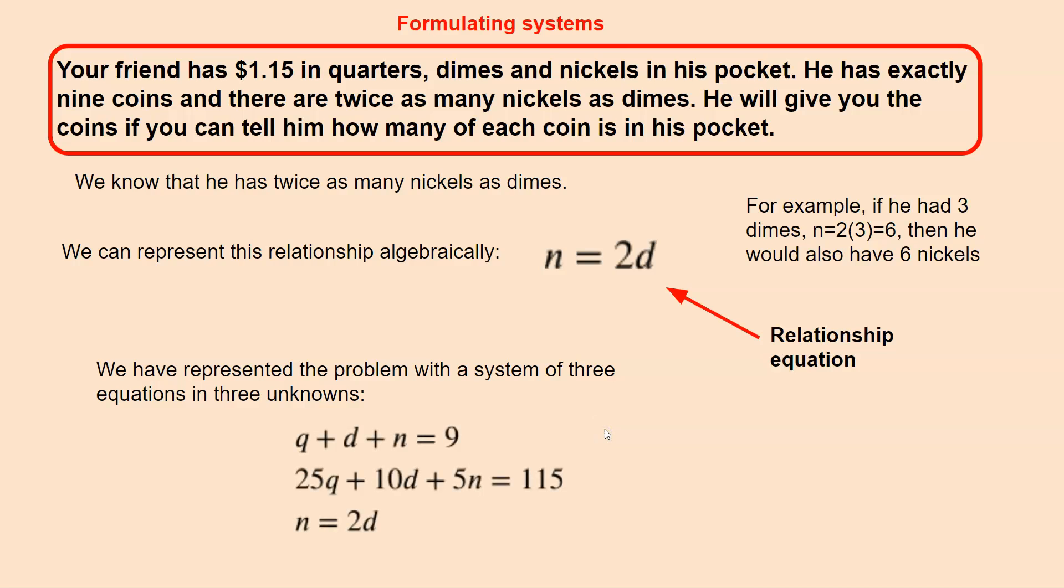So here are the three equations. We've got our total. We've got our total amount. We have our amount equation. We have our value equation. And we have our relationship equation. All this makes a three by three system of linear equations.